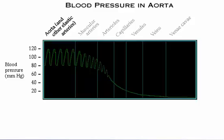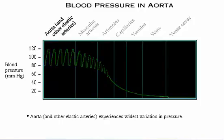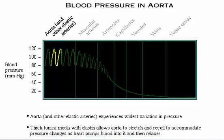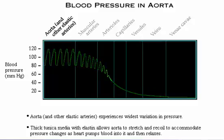The graph shows blood pressure in various blood vessels of the systemic circulation. Note that the aorta experiences the widest variation in pressure of any vessel type. Its thick tunica media with elastin allows it to stretch and recoil to accommodate this pressure change as the heart pumps blood into it and then relaxes.